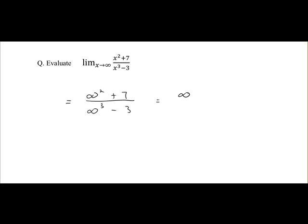Infinity squared is infinity, plus 7 is still infinity. Infinity cubed is infinity, minus 3 is still infinity. So here we are given an answer of infinity over infinity, which we know is not defined.